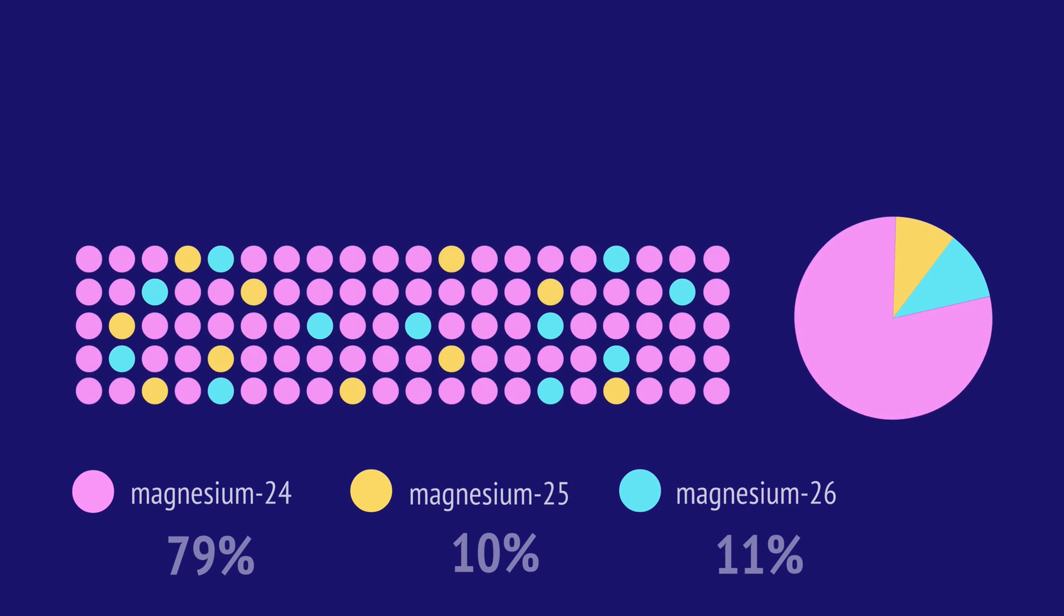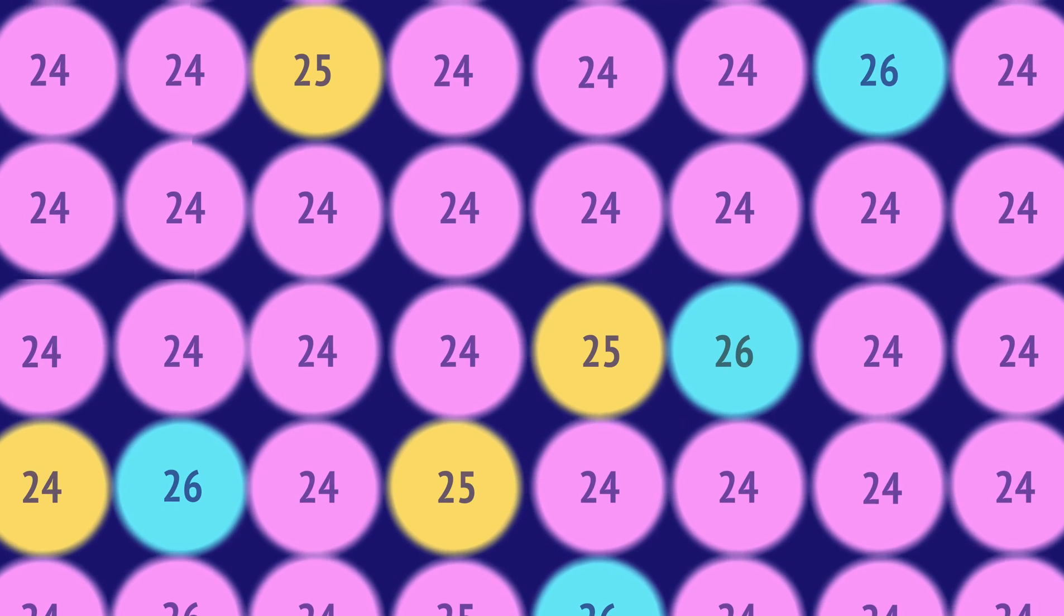These are called the abundances of the isotopes. They're the relative proportion of each isotope found on Earth. The chemical properties of these isotopes are exactly the same because neutrons have no effect on the chemical behavior of an atom. The only difference is the mass.